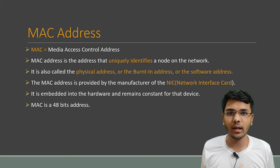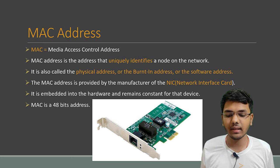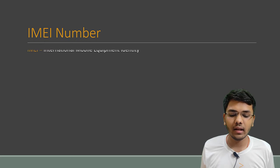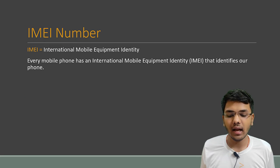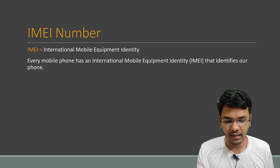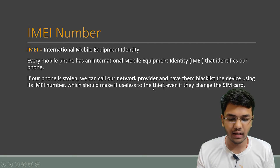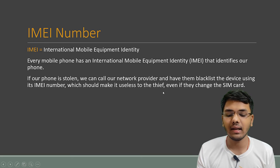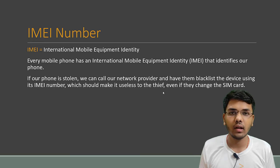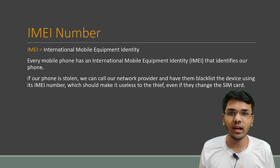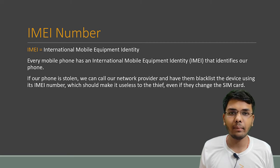IMEI number stands for International Mobile Equipment Identity. Every mobile phone has an IMEI number that identifies our phone. If our phone gets stolen, then even if the thief removes the SIM, we can identify our phone by contacting our network provider and giving them the IMEI number to identify the thief.